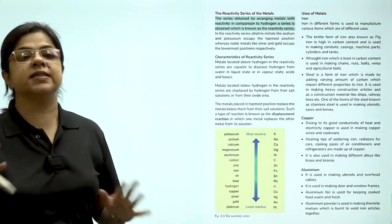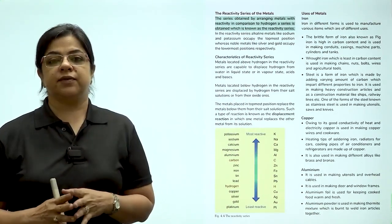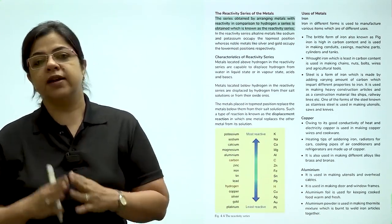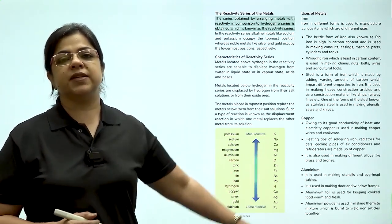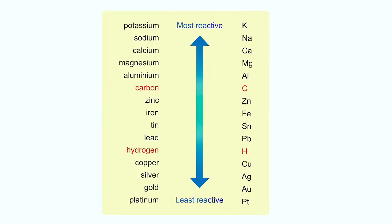Let us talk about the reactivity series of metals. All metals are not equally reactive. Some are very reactive. Some are not reactive. All these metals have been placed in a reactivity series. Let us understand how the reactivity series works. Metals located above hydrogen in the reactivity series are capable to displace hydrogen from water in liquid state or in vapor state, acids and bases. Metals located below hydrogen in the reactivity series are displaced by hydrogen from their salt solutions or from their oxide ores. The metals placed in the topmost position replace the metals below them from their salt solutions. Such a type of reaction is known as displacement reaction.